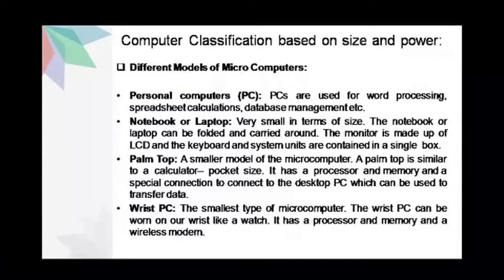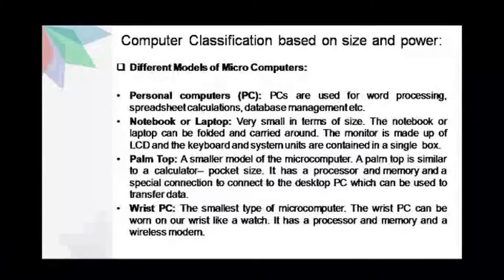The second model is a laptop or notebook, which are very small in size. The notebook or laptop can be folded and carried around. Most often the monitor is made of LCD and the keyboard and the system units are contained in a single box. The third model is a palm top, which is a smaller model of the microcomputer. A palm top is similar to a calculator which is pocket size. It has a processor and a memory and a special connection to connect to the desktop PC, which can be used to transfer data.